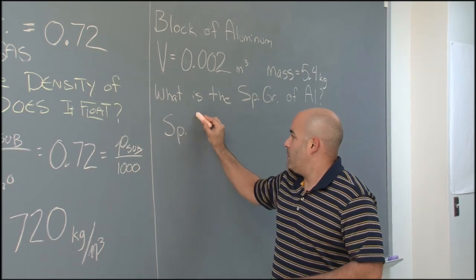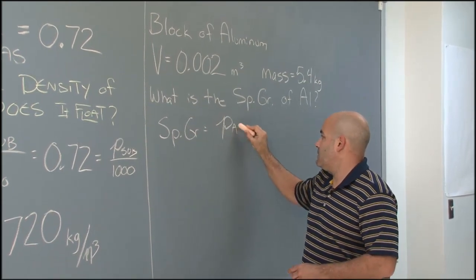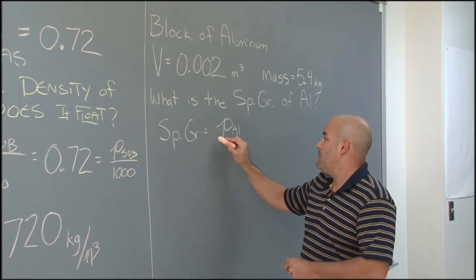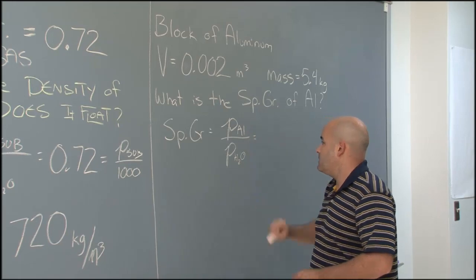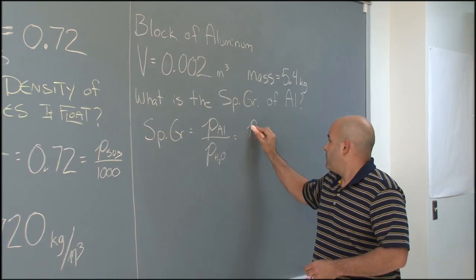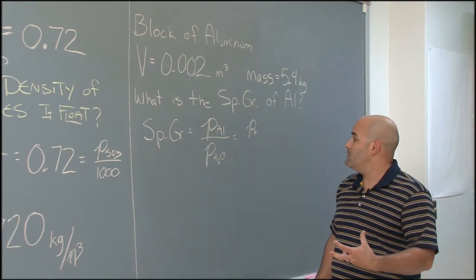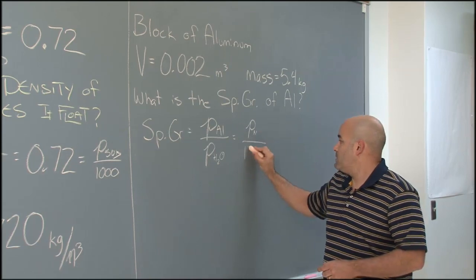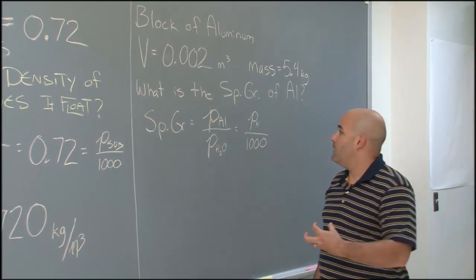Write our formula. Specific gravity. We know it's the density of our substance, and here, that substance is aluminum this time, divided by the density of water. We've got that memorized by now. It's 1,000. Let's see if I can just move the decimal place three times and get the answer right. Density of aluminum. I'm stumped. That was not given in this problem. If I knew it, I could just simply take that and divide by 1,000. We'd be all set. How do I find a density?